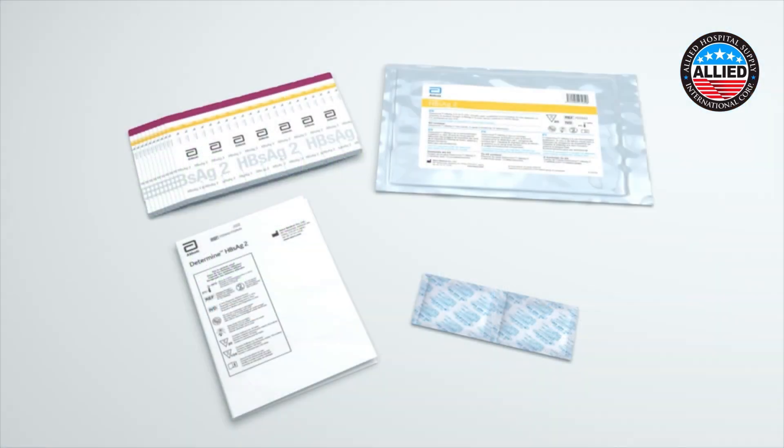Test Kit Components. Each hepatitis B surface antigen kit contains one aluminum Ziploc pouch containing either 20 tests or 100 tests, a desiccant package, and package insert.